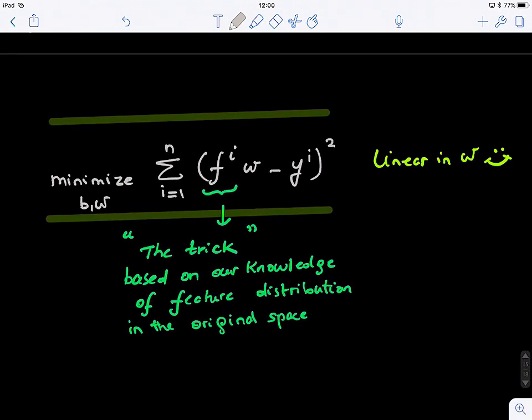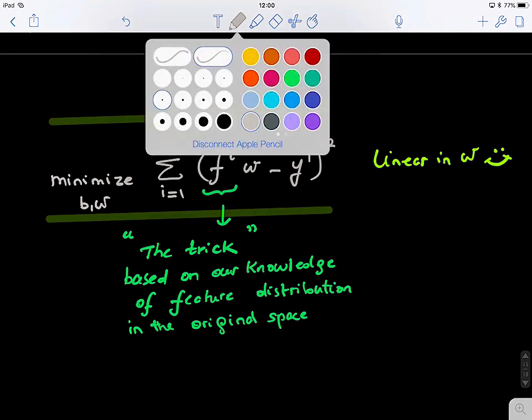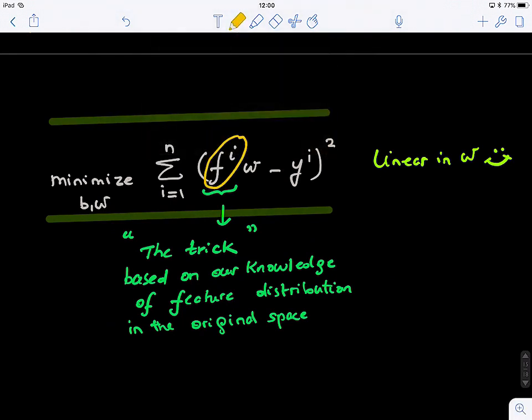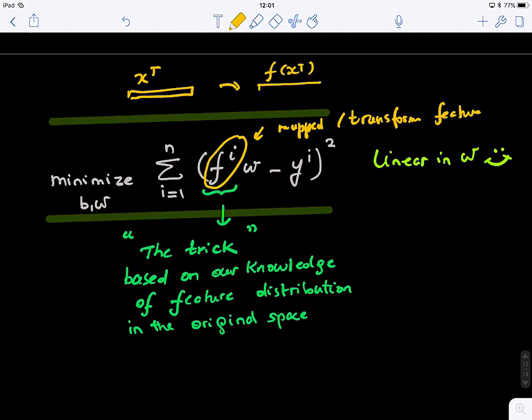Now, we have our new minimization loss function, and remember, guys, we can also add our regularization term, but in this case, we don't have any regularization. But we have mapped our original features into a new space. So these are the mapped or transformed features. So for each vector x, so xt here, I'm just putting in, I map it using f, so I have f of xt, which is a vector of the same dimension or same size. Great.